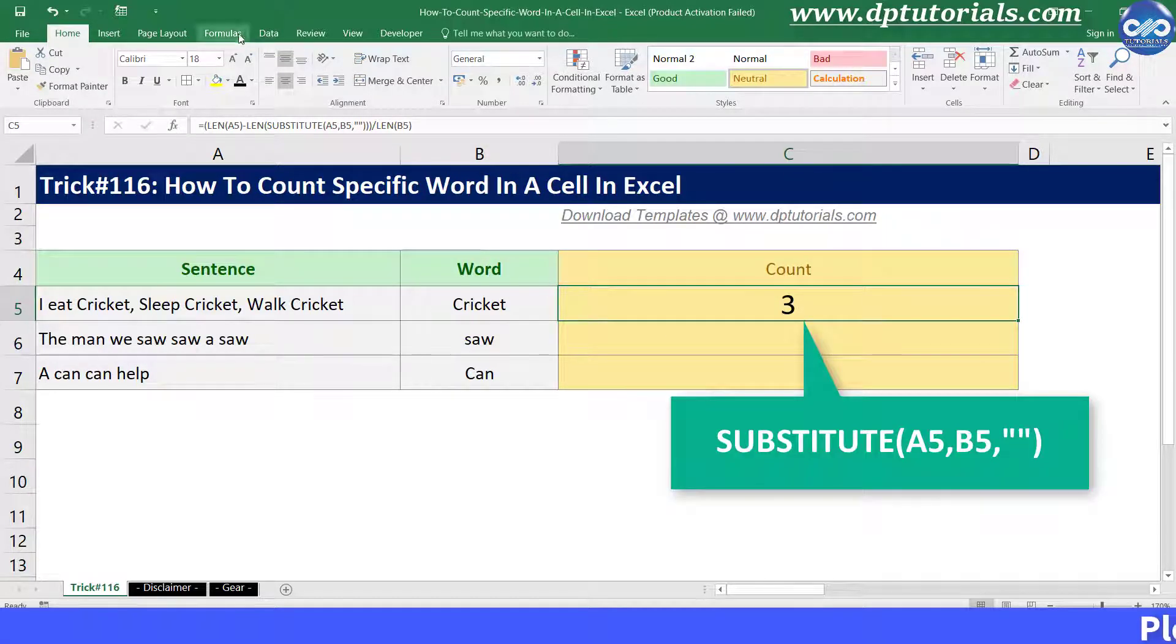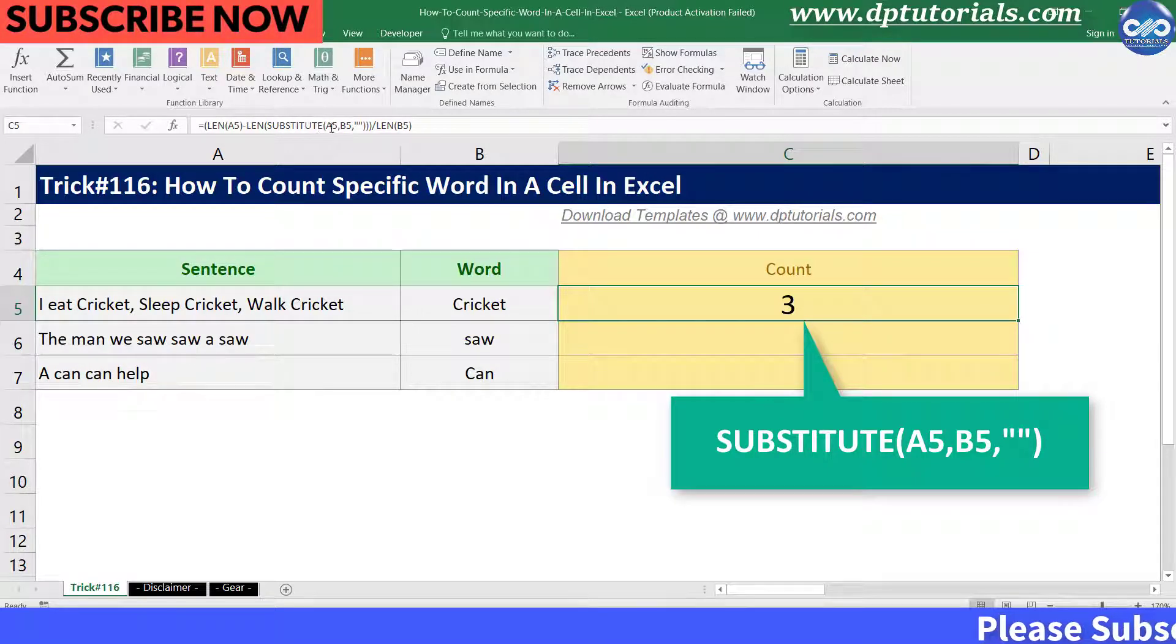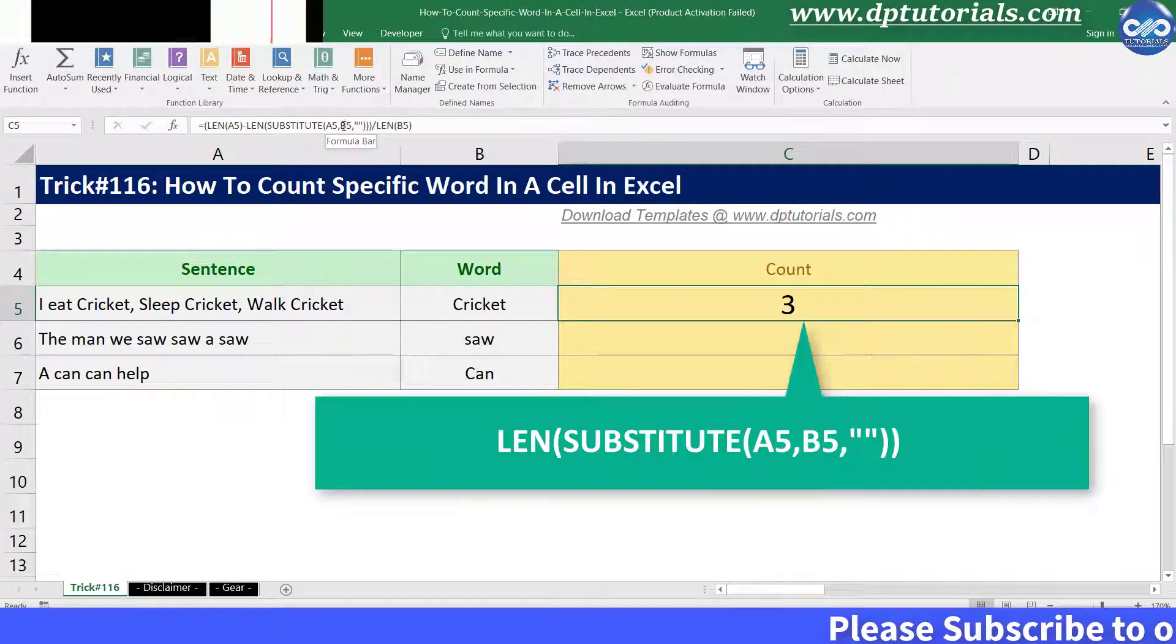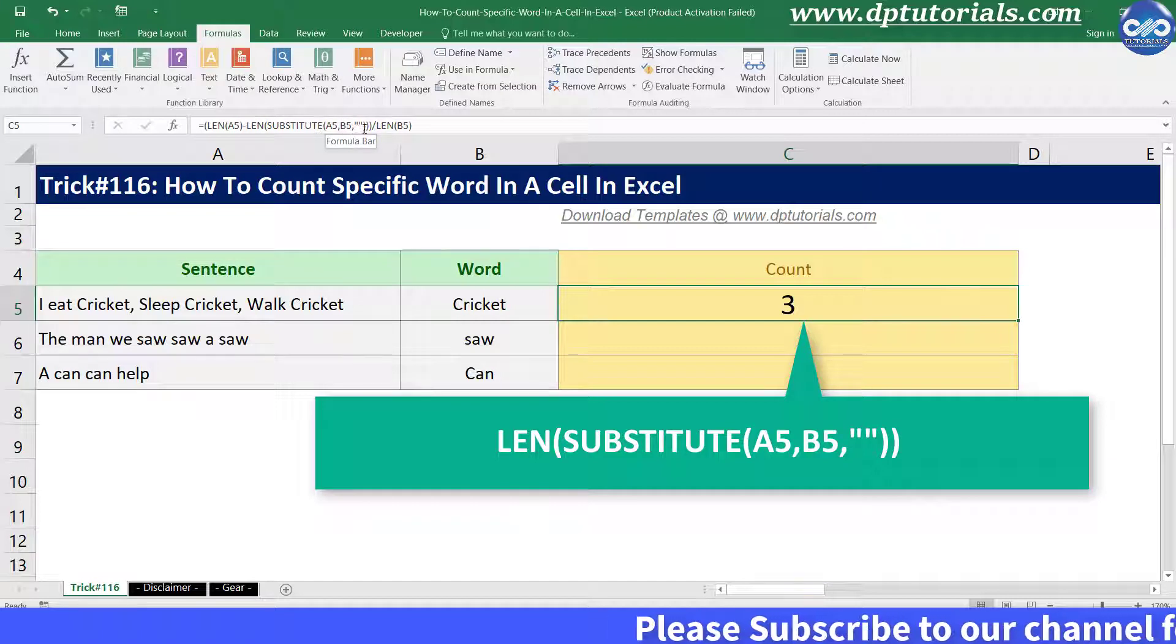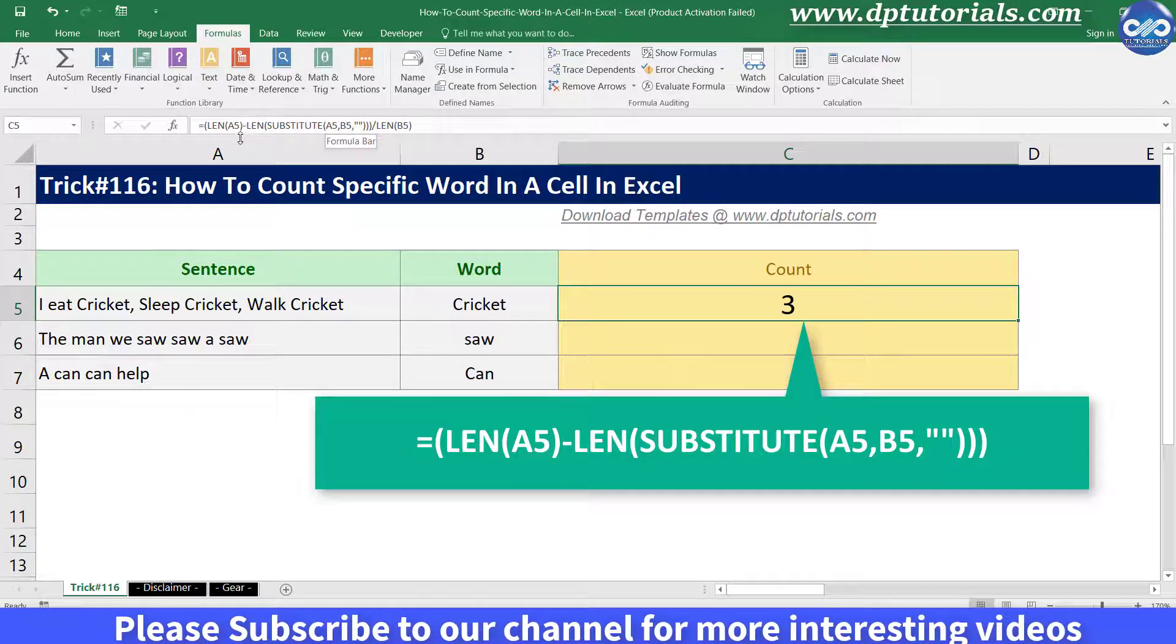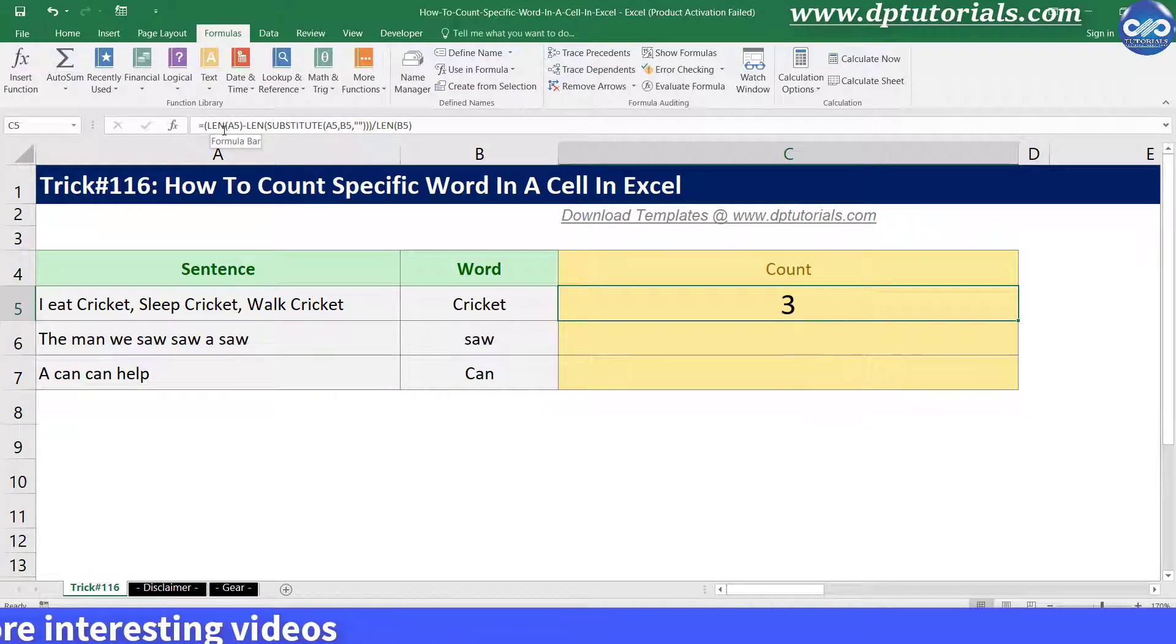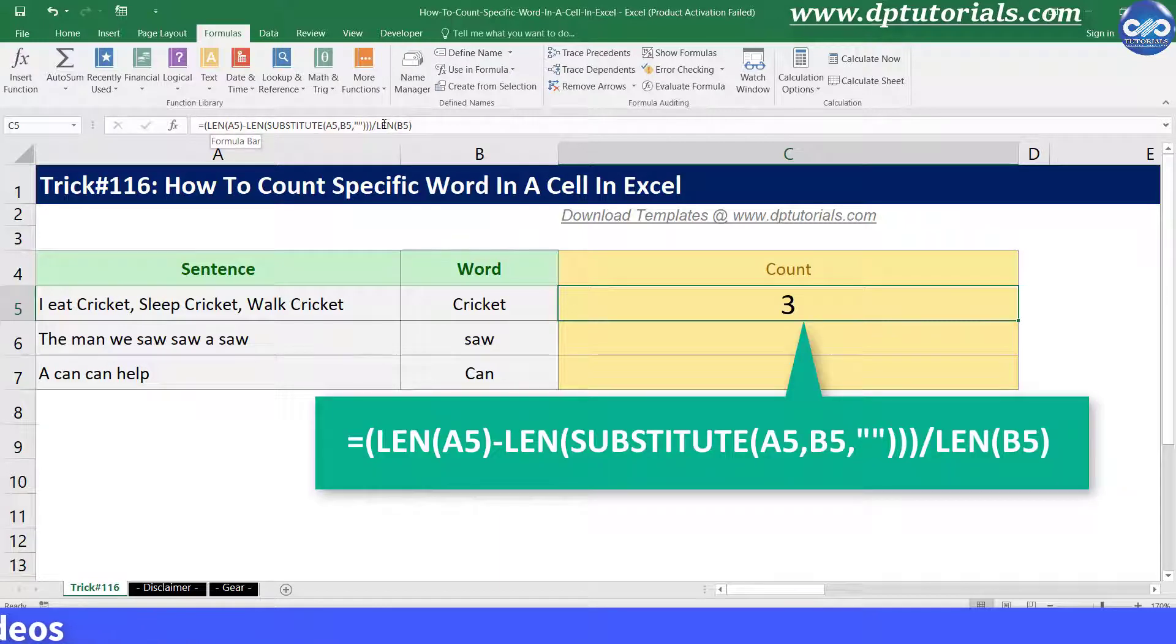Now, using the SUBSTITUTE function, we are replacing the word cricket with space and counting the length of this text using the LEN function. And then we are subtracting this value from the length of the original text, that is the sentence length. And then this number is divided by the length of the word that needs to be counted.